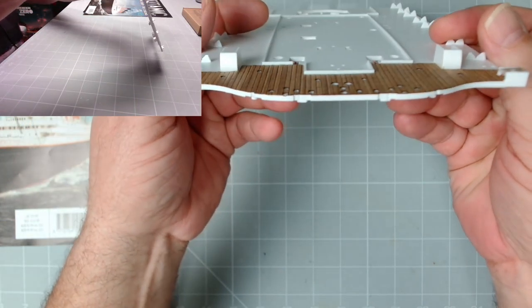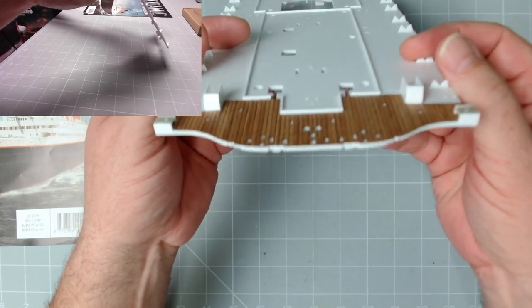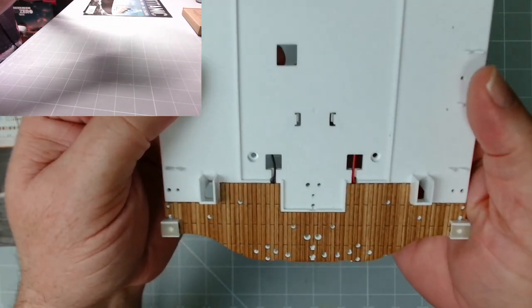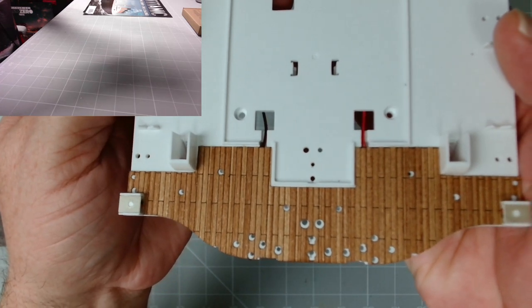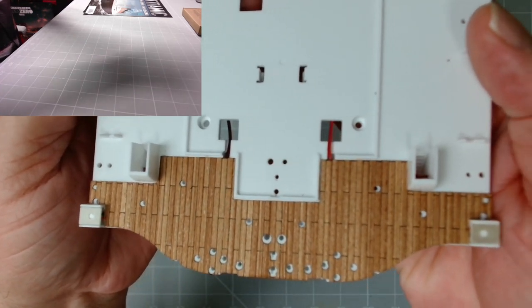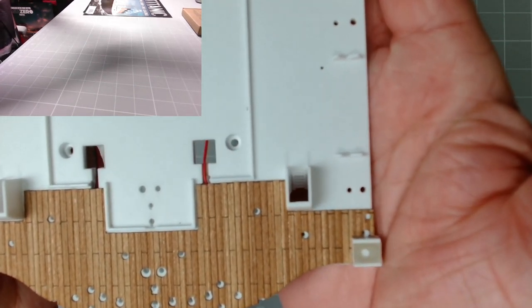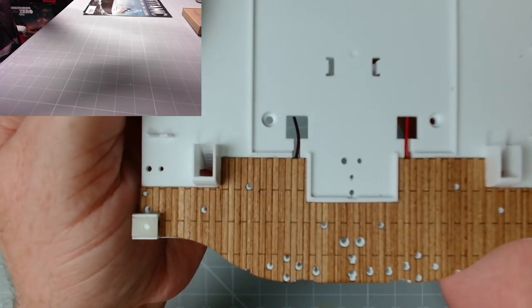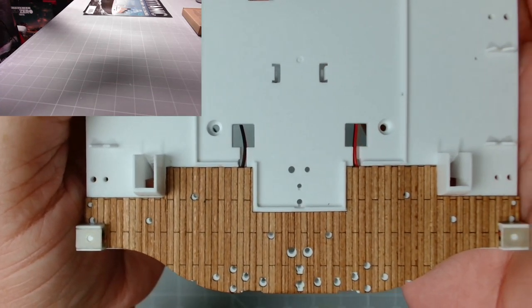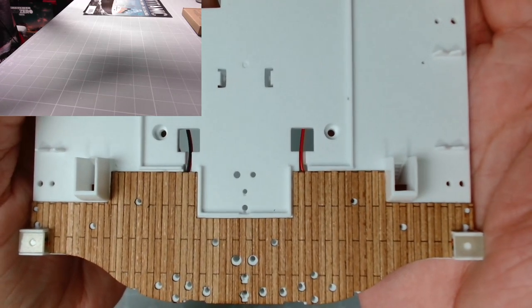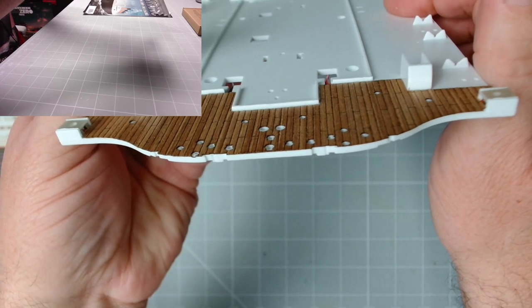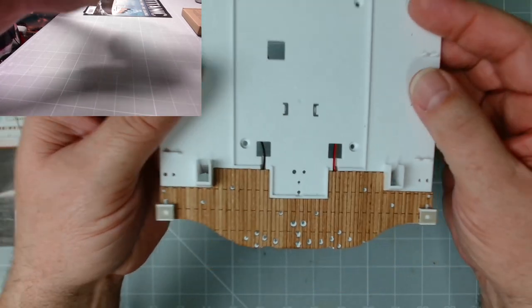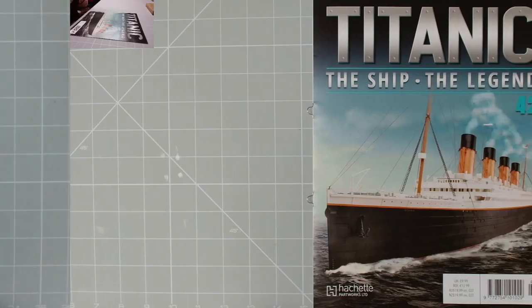Here we have issue 41. That decking's gone on nice and flat now after keeping it clamped overnight. The vast majority of the holes are showing. They're not perfectly aligned, as you can tell, but that's the decking, all the plastic, whatever. We should be able to work with that no problem. It's looking pretty good, nice and flat. Excellent stuff.